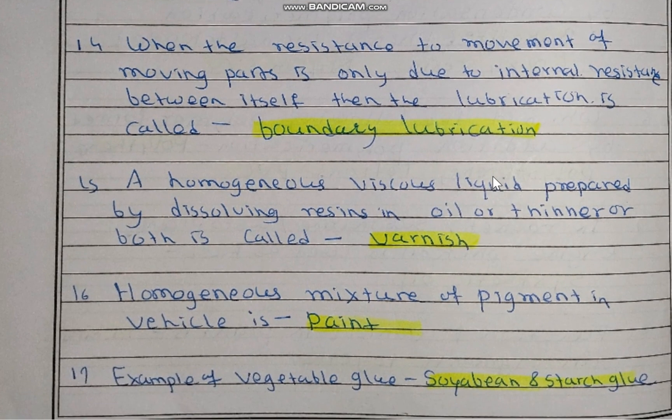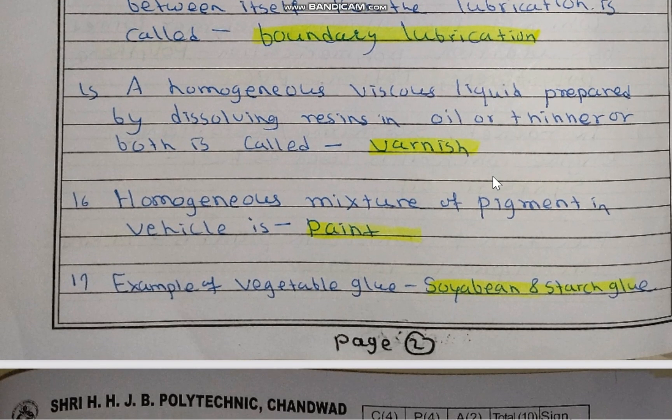When the resistance to movement of a moving part is only due to internal resistance between itself, the lubrication is called boundary lubrication. The three different types of lubrication are: fluid film lubrication, extreme pressure lubrication, and boundary lubrication.